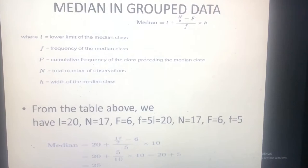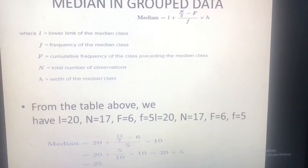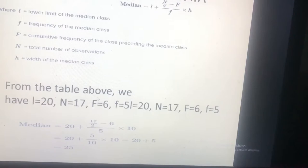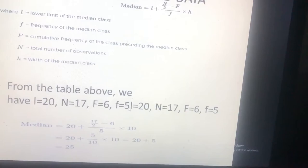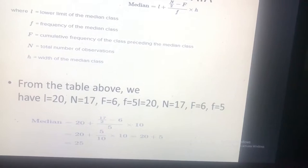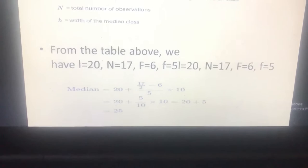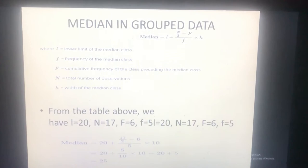From the table we have L equals 20, n equals 17, F equals 6, f equals 5, and h equals 10. Applying the formula: Median = 20 + (17/2 minus 6) divided by 5, times 10. The result is 25. So 25 is the median of this grouped data.